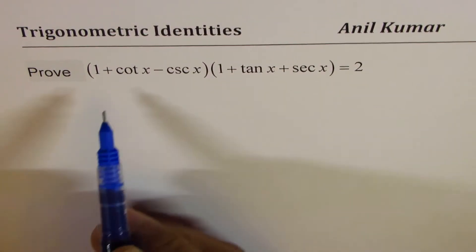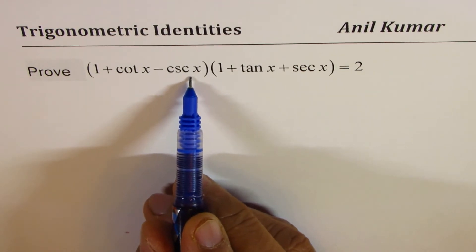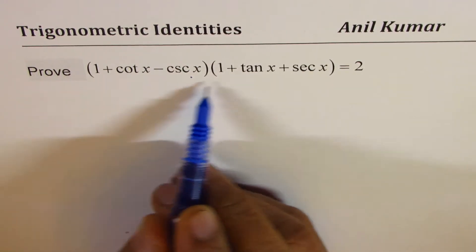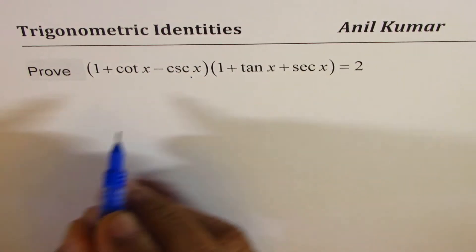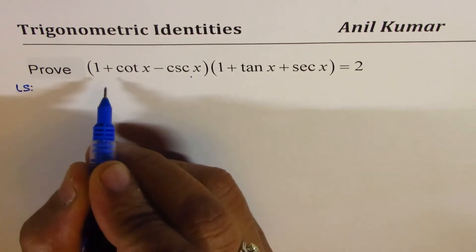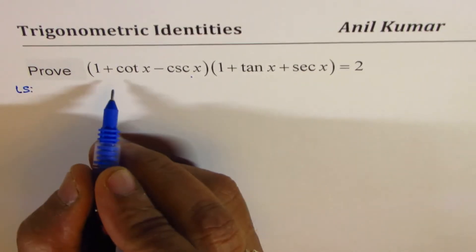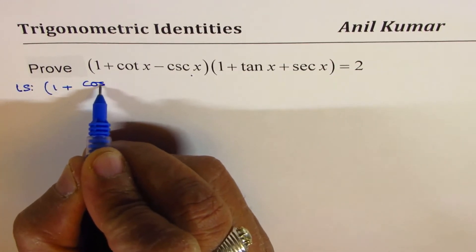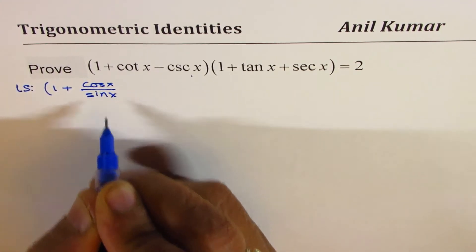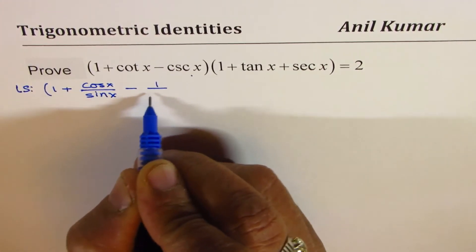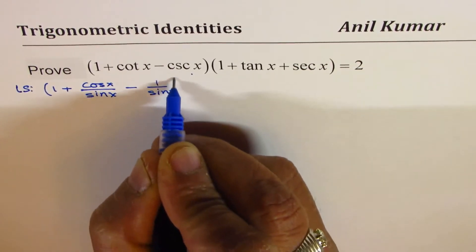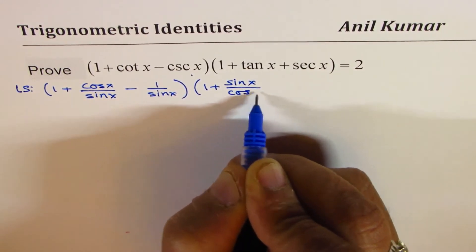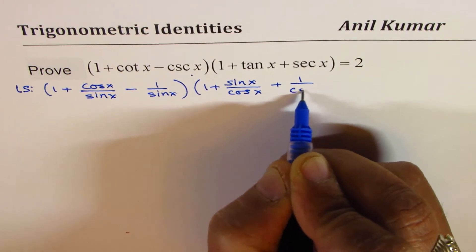Now we will prove 1 plus cot x minus cosecant x times 1 plus tan x plus secant x is equal to 2. Let us write all of them in terms of sine and cosine. So we will begin with the left side, writing each one as sine and cosine. It could be written as 1 plus cot is cos x over sin x, minus cosecant is 1 over sin x, and here we have 1 plus tan which is sine x over cos x, plus secant which is 1 over cos x.